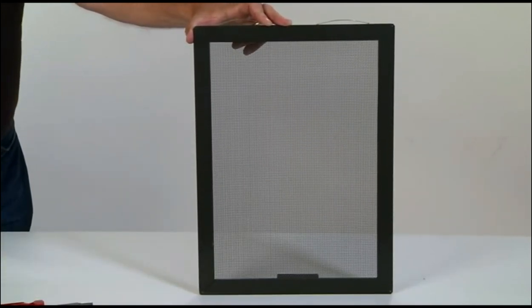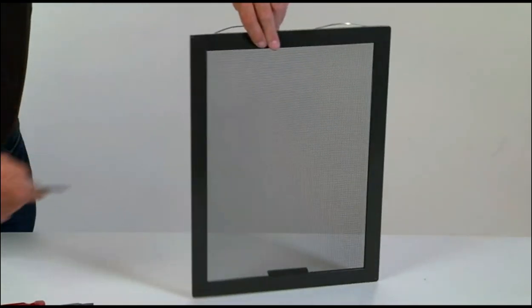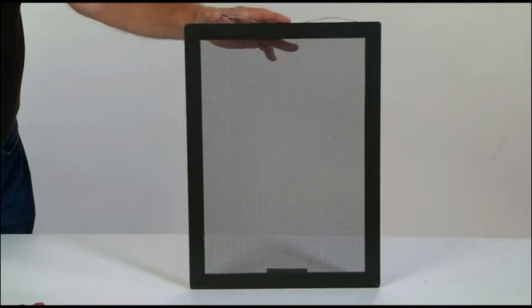Also, the Permascreen frame profile does not exceed 1 quarter inch at the track insertion point. All sections of the frame will be constructed of extruded aluminum.